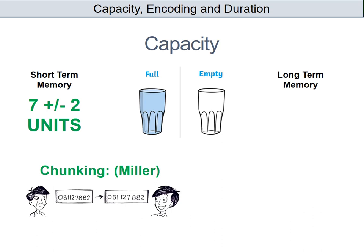However, if we do something called chunking — which we've done on the right there — we put 081127882 into three chunks of information, which many more people would be able to remember. This idea of chunking was developed by a psychologist called Miller and is used very often in things like telephone numbers, postcodes, and car number plates, because it helps us to increase the capacity of our short-term memory.